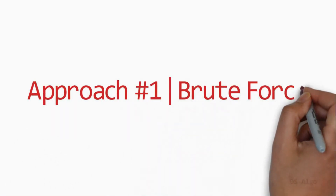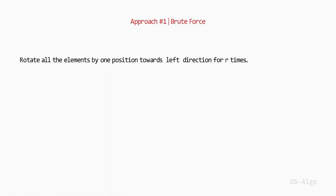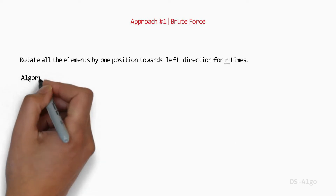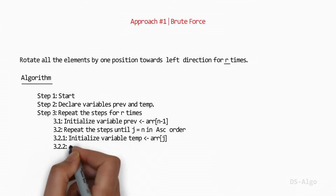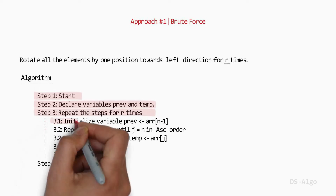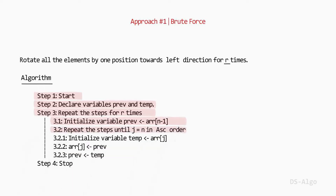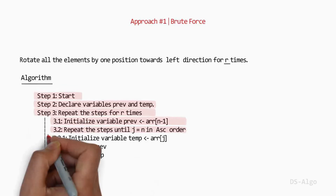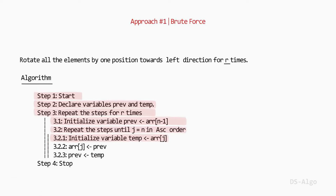Approach 1: Brute Force. This is a straightforward approach in which we rotate all the elements by one position towards the left direction for r times, where r is the rotation count. The algorithm: start execution, declare two variables prev and temp for shifting elements. Repeat r times — initialize prev with the last element, then repeat until j equals n in ascending order: initialize temp with the element at location j, update the element at j with prev, then update prev with temp. Stop execution.